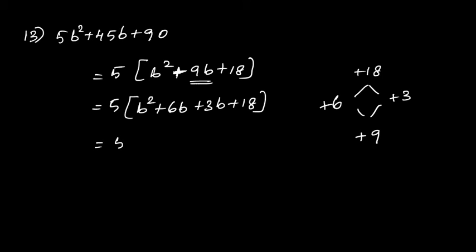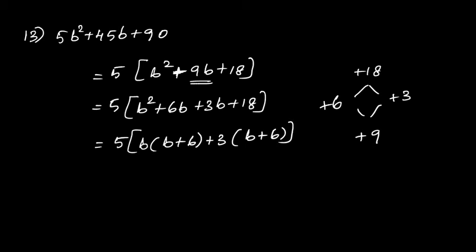Write 5. Take b as common from the first two terms to get b(b+6). From the next two terms, take +3 as common to get 3(b+6). Now write it together: 5(b+3)(b+6).